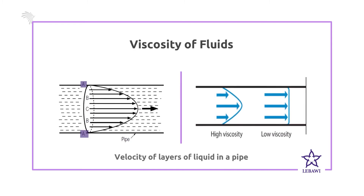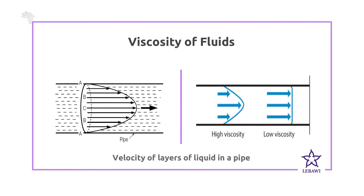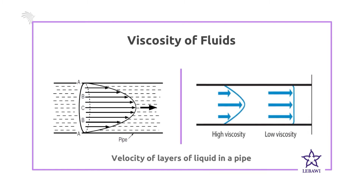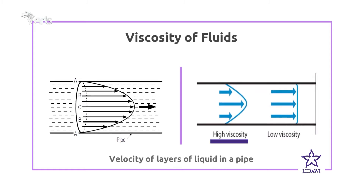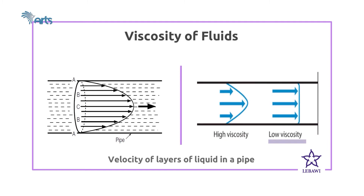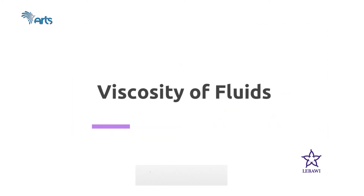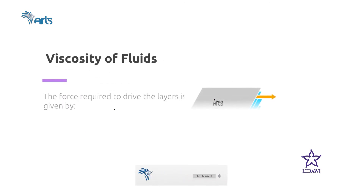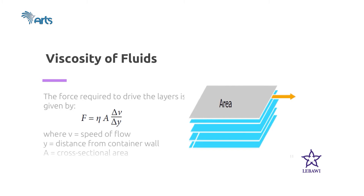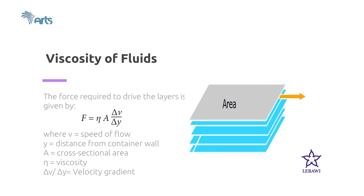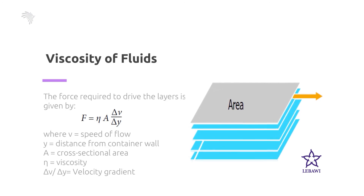The velocity difference between layers tells us how viscous the fluid is. A fluid with high viscosity has a large velocity difference between layers, while low viscosity means all layers have nearly the same velocity. We calculate the shear force required to drive layers of the fluid using an equation with parameters: eta, which is the viscosity of the fluid; A, the cross-sectional area; and delta-V over delta-Y, the velocity gradient representing velocity difference between consecutive layers.